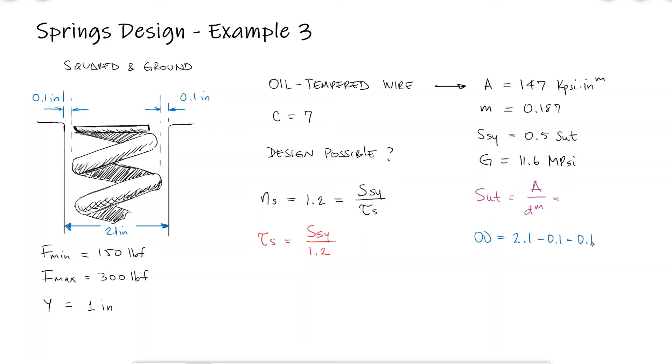The outer diameter should be 1.9 inches because of the stated clearance requirement, and we know that it's also equal to capital D plus d. Since the coil diameter is 7 times the wire diameter, we can find the wire diameter.